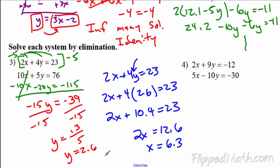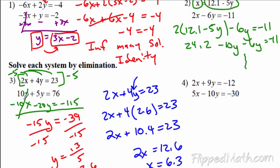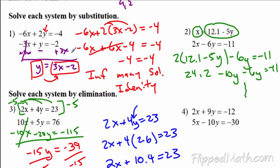So those are the first two methods: substitution and elimination. In elimination, you want to get some variables to cancel. In substitution, you want to solve for one variable and plug it into the other equation. Remember, if all the variables cancel out and they're equal to each other, it's infinitely many solutions. If they're not equal to each other, then you write no solution.